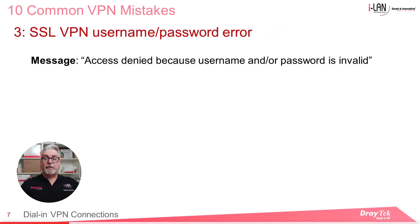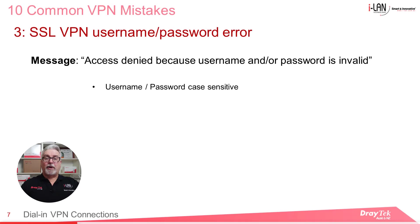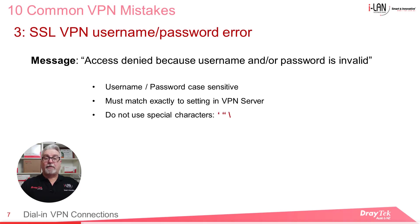Sometimes when you use the Smart VPN client to connect to a VPN server, a message — "access denied because username and/or password is invalid" — shows up even though the password appears to match. This can happen because even though the passwords may look the same, there may be a special character which isn't visible. The username and password are also both case sensitive, and these have to match exactly what has been set up on the VPN server. In addition, the username cannot contain special characters such as single quote, double quote, or backslash.